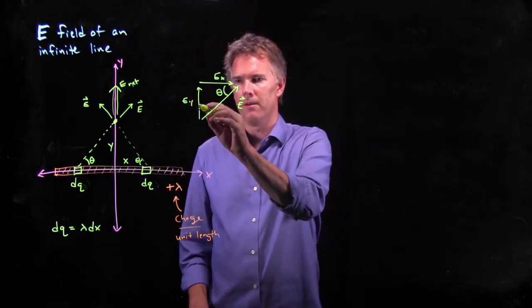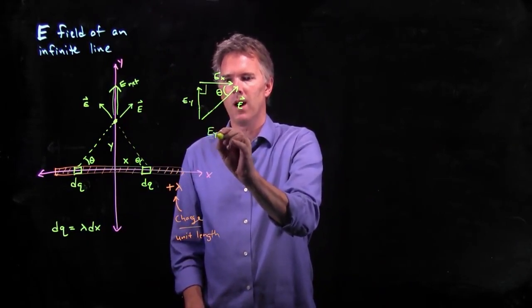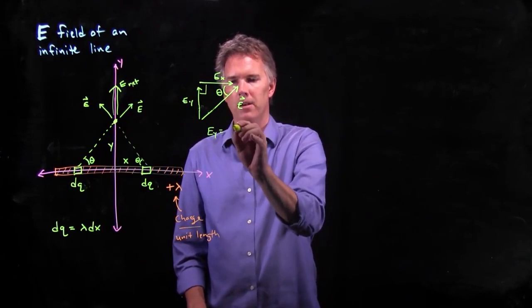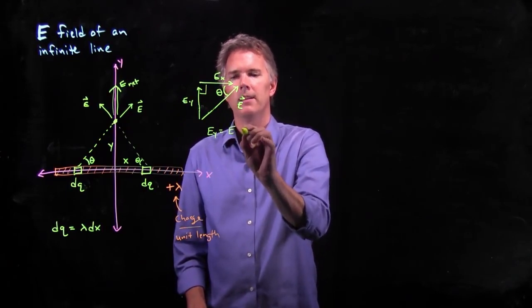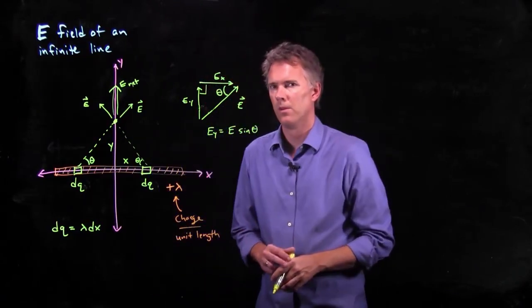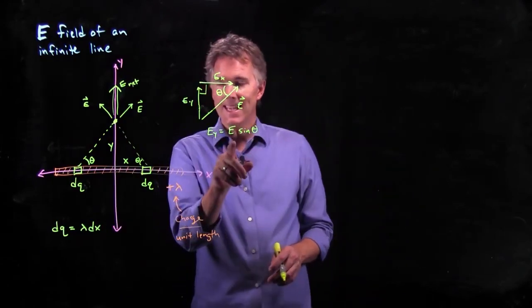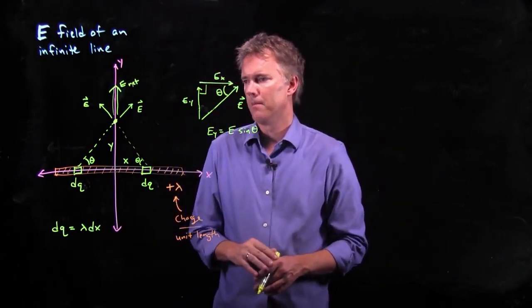What is e sub y now? Well, this is the right angle in our triangle. e sub y is, therefore, the hypotenuse of the triangle times sine of θ. That looks pretty good. Now, if we can figure out what e is, we're probably going to be in good shape.